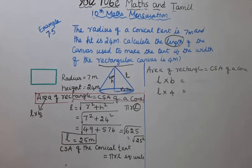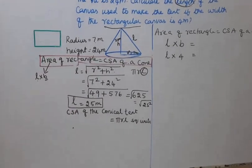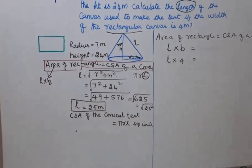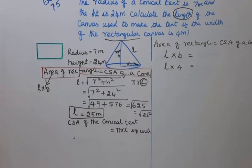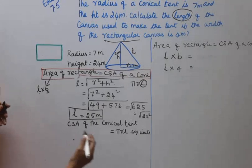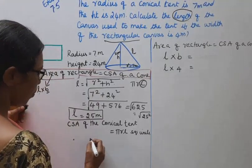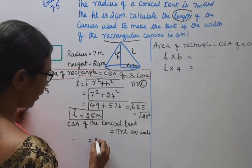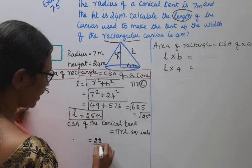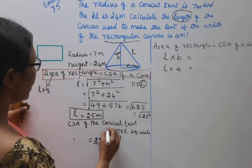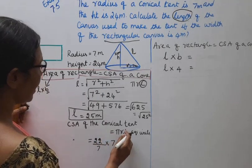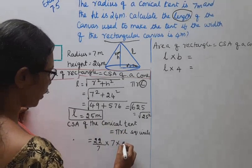Now we know the CSA of the conical tent. CSA = πRL. π is 22/7, R is 7, and L is 25.